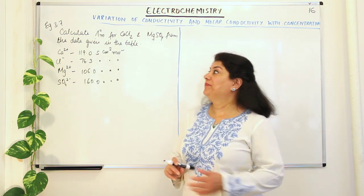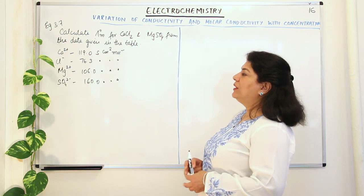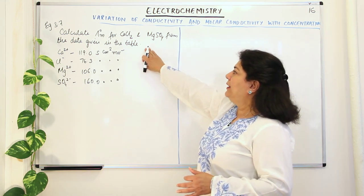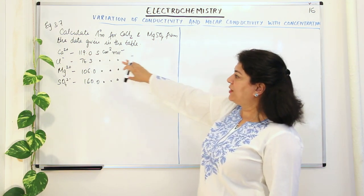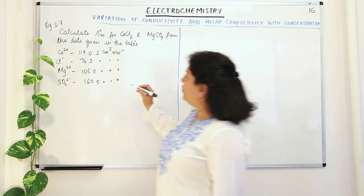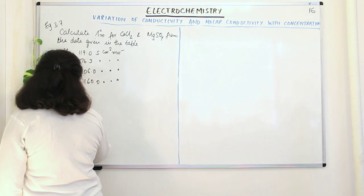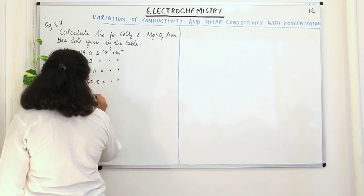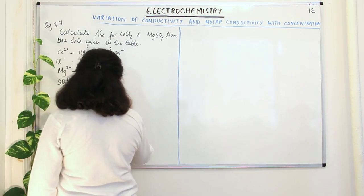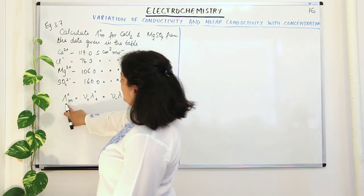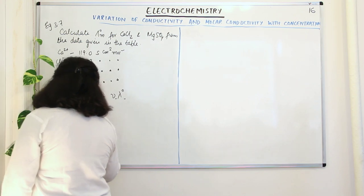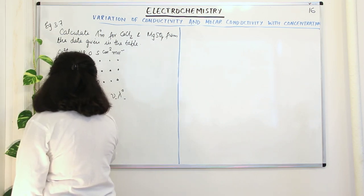This is example 3.7. The question asks you to calculate the limiting molar conductivity for calcium chloride and magnesium sulphate from the data given in the table. I have already referred to the table and written down the values of calcium, chloride, magnesium, and sulphate. We know that Λ°m = V⁺ λ°₊ + V⁻ λ°₋. The first compound is calcium chloride: we have to find λ°m for CaCl₂.